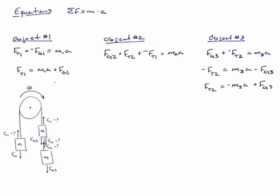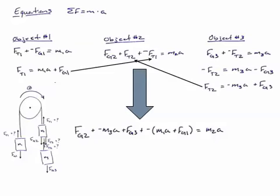At this point now, all I'm doing is making a substitution. I'm going to take what my value is for FT1, or my equation for FT1, and I'm going to substitute it in for FT1. And I'm going to do the same thing for FT2. When I do that, it's going to give me a nice big long equation just like this.